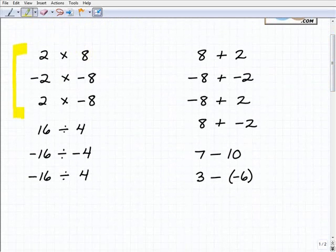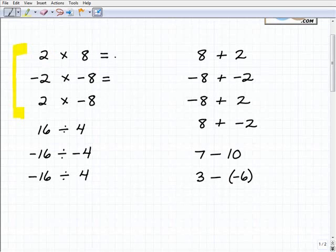I want to take a look at the multiplication rules. Anytime you're multiplying two numbers where the signs are the same, in other words, a positive times a positive or a negative times a negative, the answer is always positive. So two times positive eight equals positive 16. Once again, negative two times negative eight, the signs are the same, both negative, positive answer, positive 16.